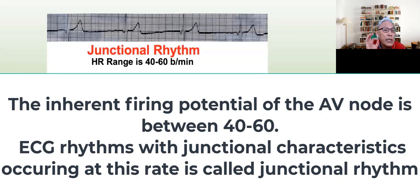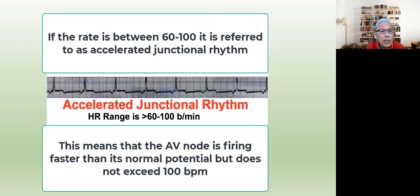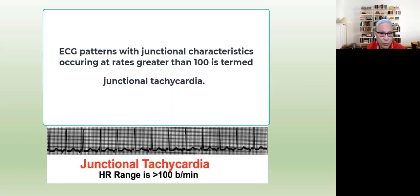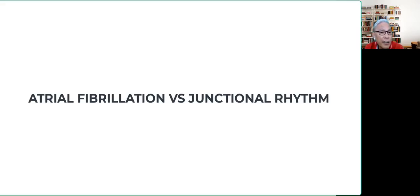The normal inherent rate of the AV node is between 40 to 60 beats per minute. So if we see a rhythm that has the characteristics of a junctional beat, we would call that a junctional rhythm. However, if the rate is between 60 to 100, then we would call that accelerated junctional rhythm. And if it is over 100, then we would call that a junctional tachycardia.